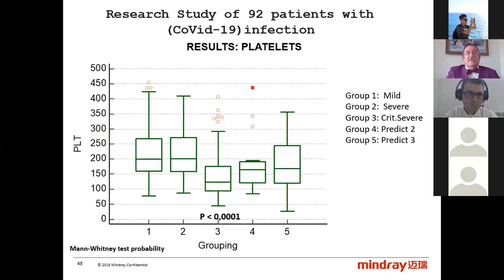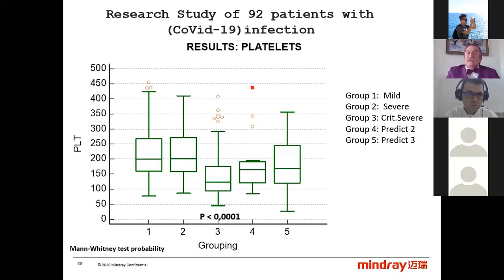Platelets — as mentioned in the chat. Platelets are not changed in the severe cases that are not critical, but decrease clearly when patients enter the critical phase — after the cytokine storm. The D-dimer may also be positive, and we have to analyze whether patients also have intravascular coagulation. Yes, platelets are a good indication of severity, with a very significant peak at the critical stage.